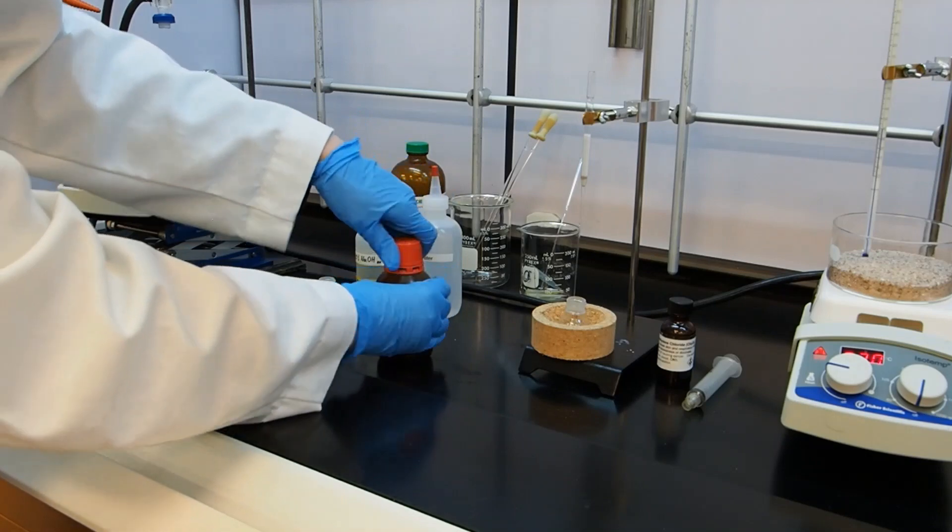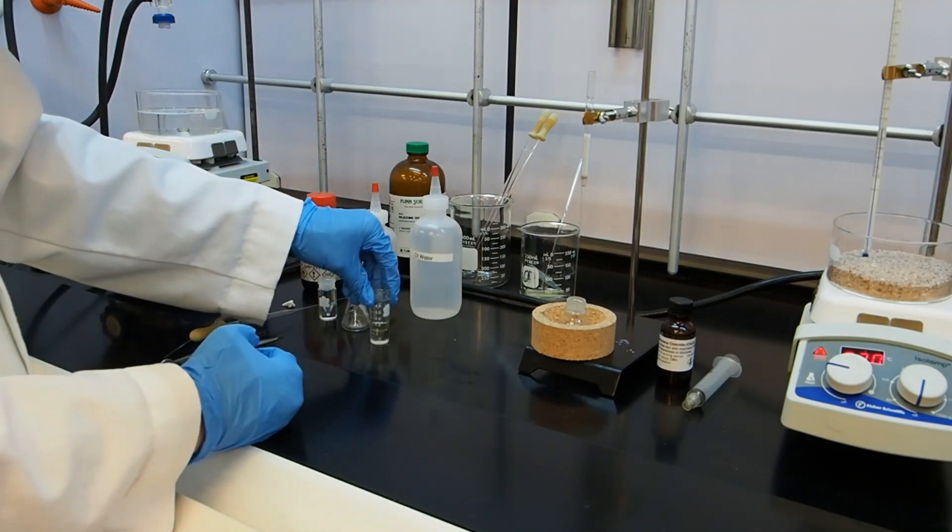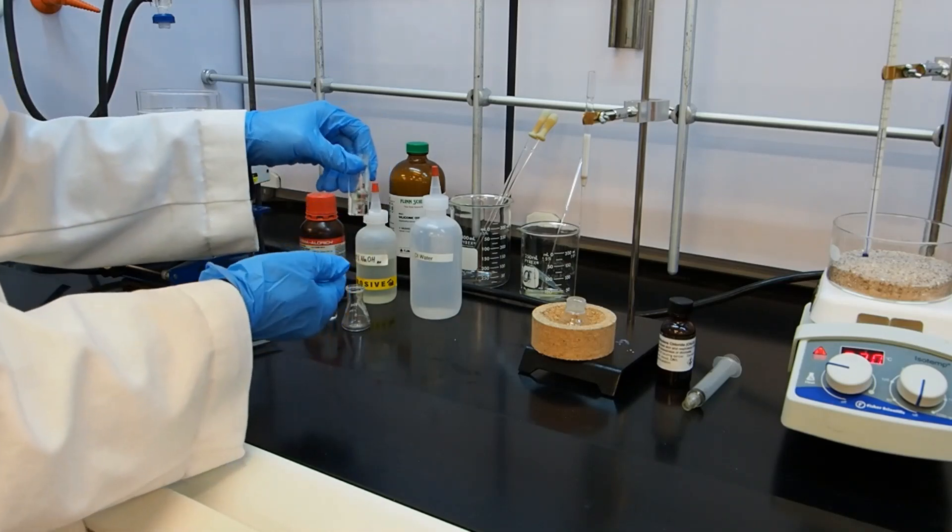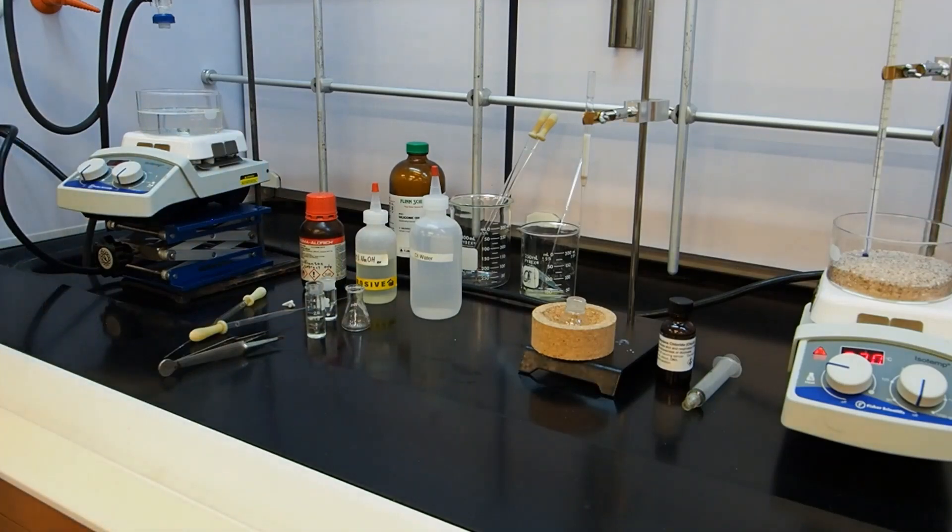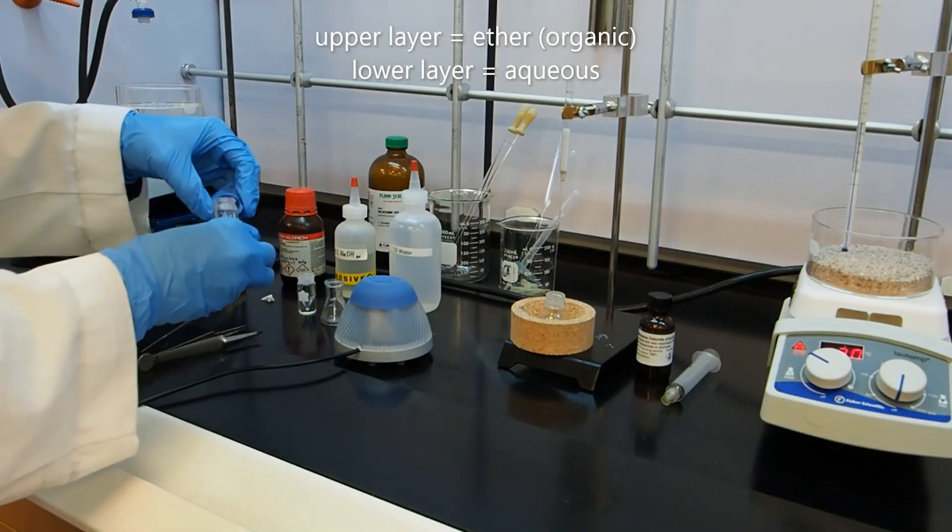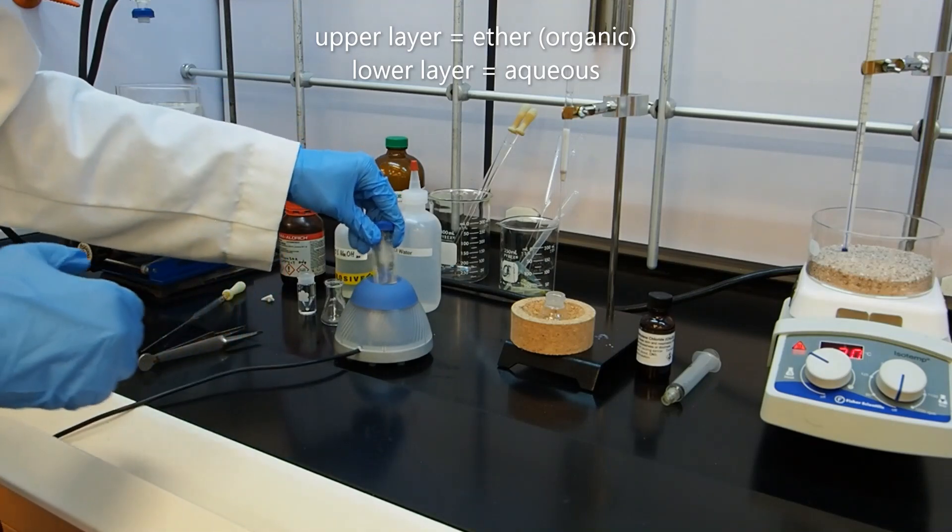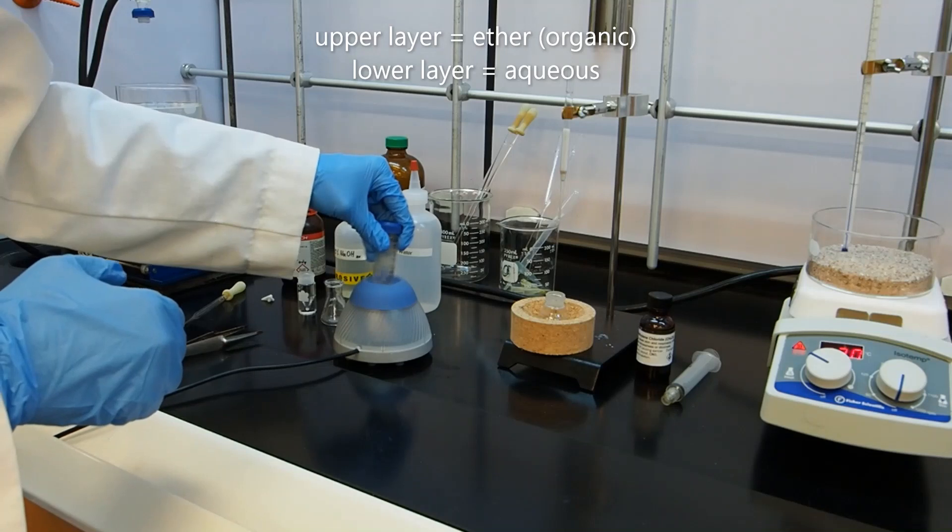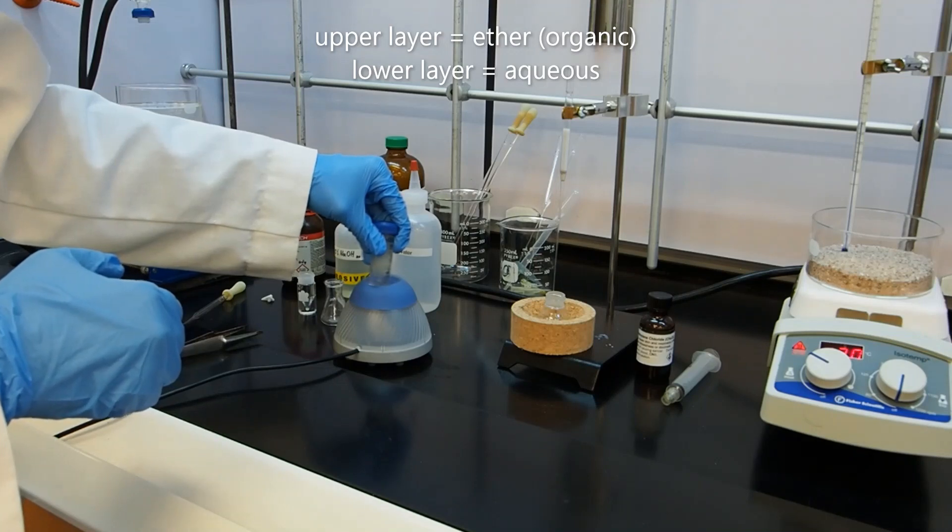At this point, we should definitely have two layers because our original reaction solvent was water and now we've added the ether to it. The ether has a lower density than water, so it should be the top layer. So now that we have two layers, we're going to cap the vial and we're going to vortex it to ensure that there is as much interaction between the two layers as possible.